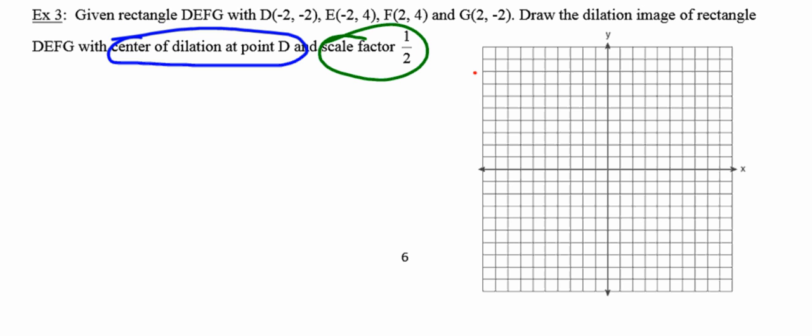So the first thing I'm going to do is plot the points. And I'll draw my rectangle. And now we want the center of dilation to be at point D. So that's a little bit different. I'm going to make point D a different color. And a scale factor of 1/2.